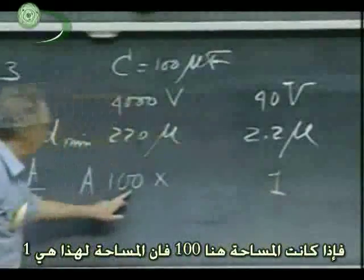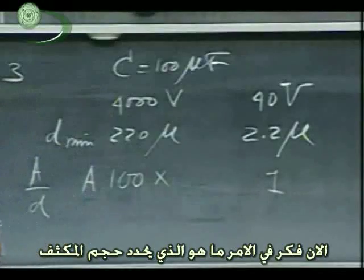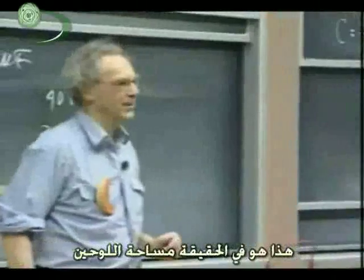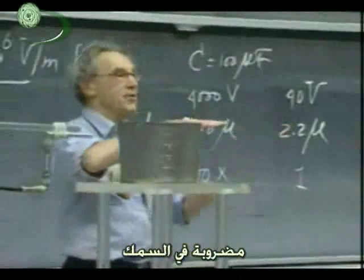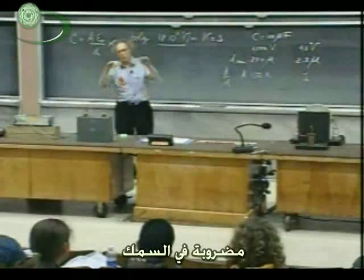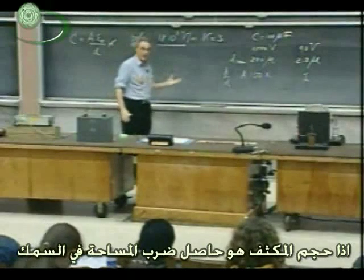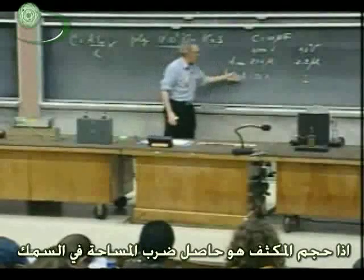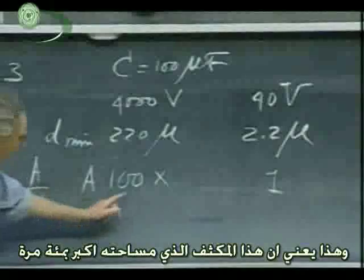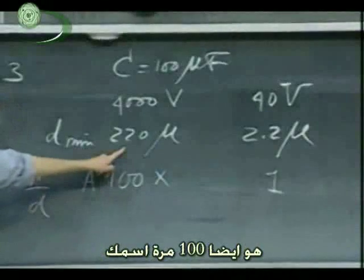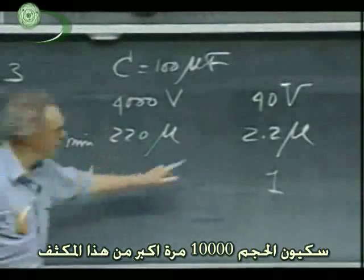So if A here is 100, then A here is one. Now think about what determines the volume of a capacitor — that's really the area of the plates times the thickness. If I ignore the thickness of the conducting plates, then the volume of a capacitor is the product of area and thickness. So this capacitor, which has 100 times larger area and is 100 times thicker, will have a 10,000 times larger volume.